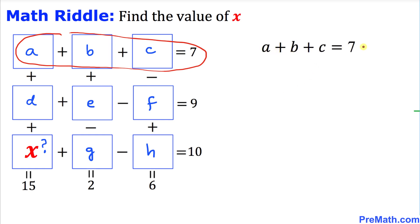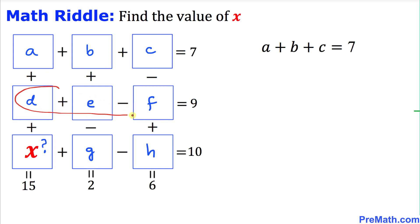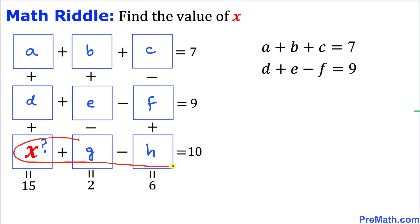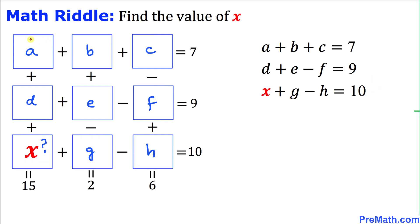Now let's focus on the next three boxes: d plus e minus f equals 9. And for the bottom three boxes: x plus g minus h equals 10. Now let's look at the boxes the other way around — a plus d plus x equals 15.